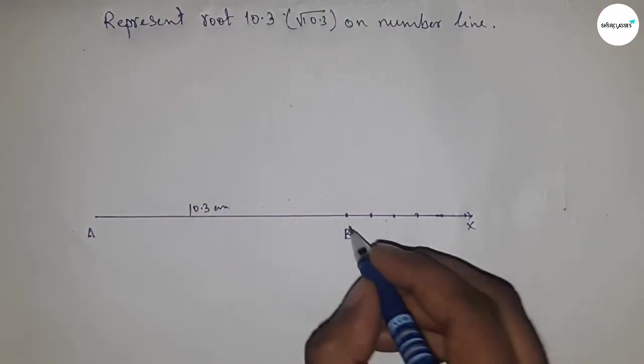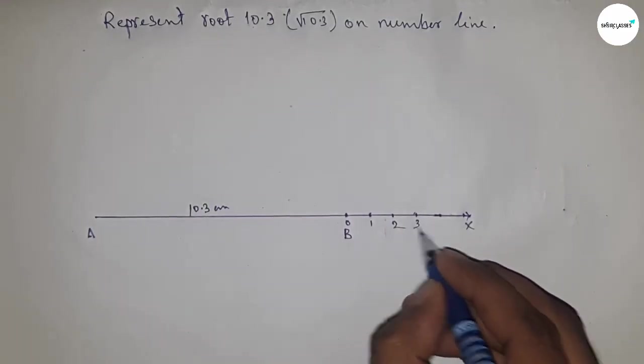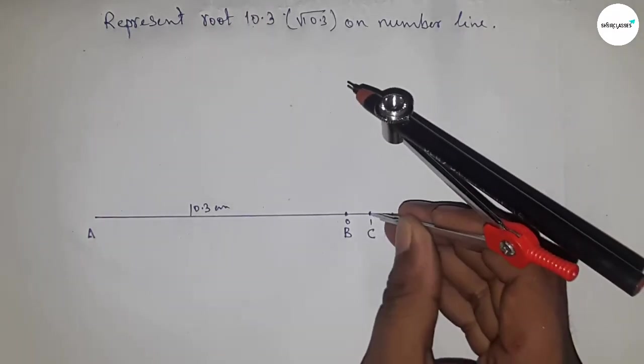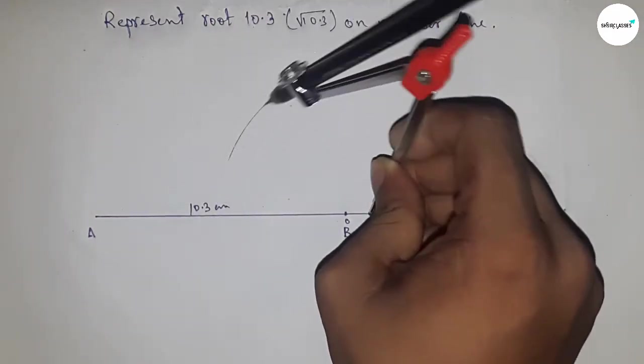This is 0, 1, 2, 3, 4, 5, and so on. And taking this as point C. Next, we have to bisect the line AC, so putting the compass and taking greater than half of AC.